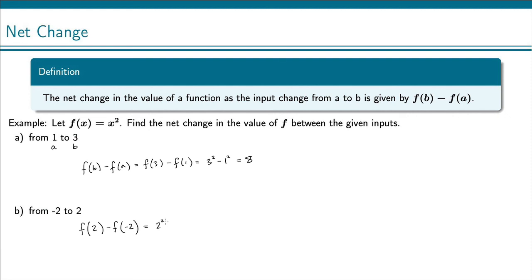And then we go and plug those into our function. So 2 squared minus negative 2 squared equals, this is 4 minus 4, which is 0. So the net change from negative 2 to 2 is 0.